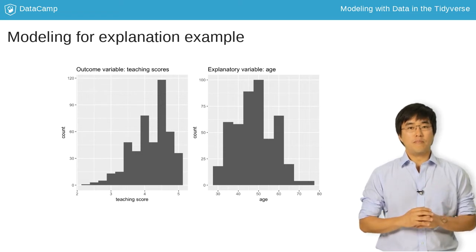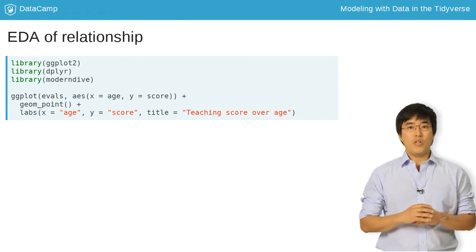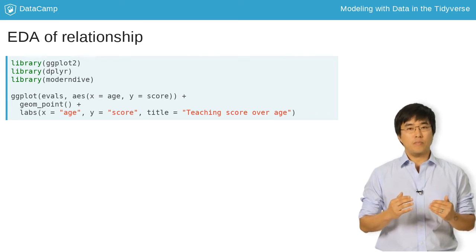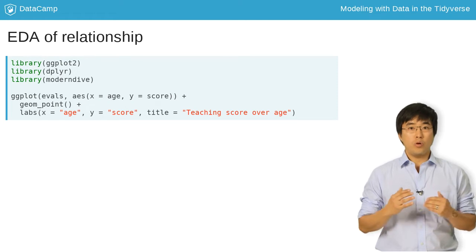Using a scatter plot. You use a geom_point to create a scatter plot with x mapped to age and y mapped to score. This will mark each instructor's age and score with a point.